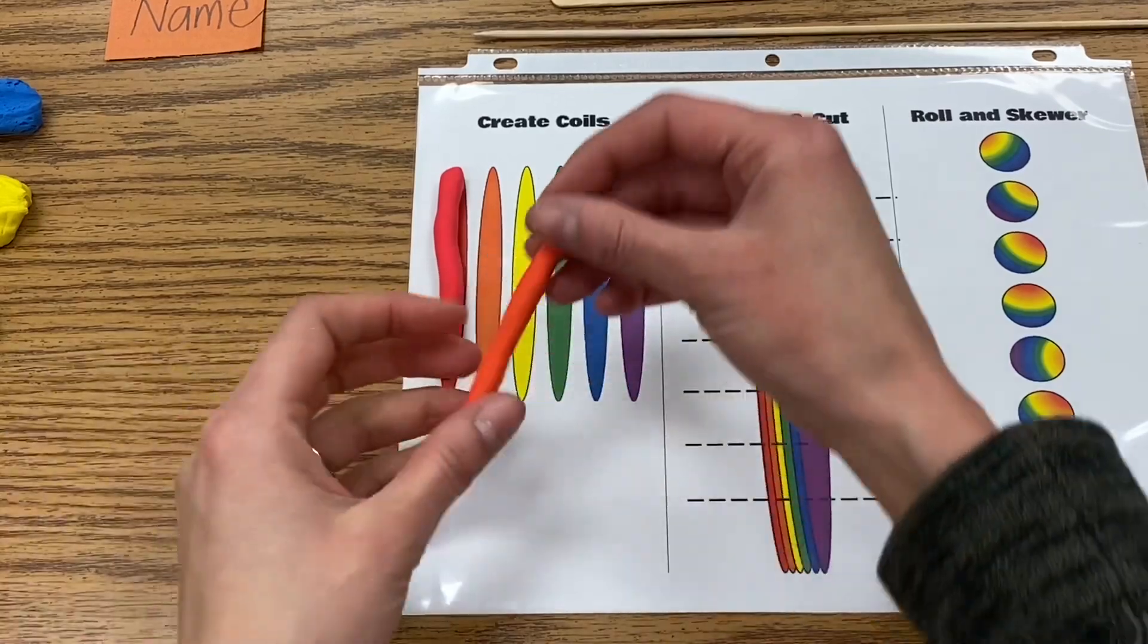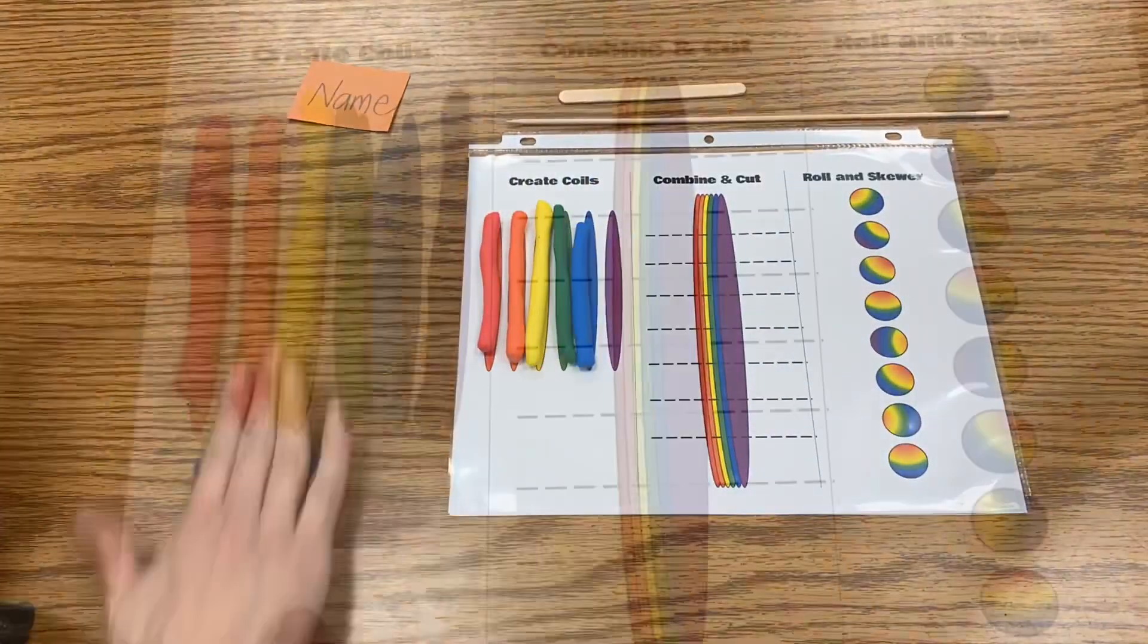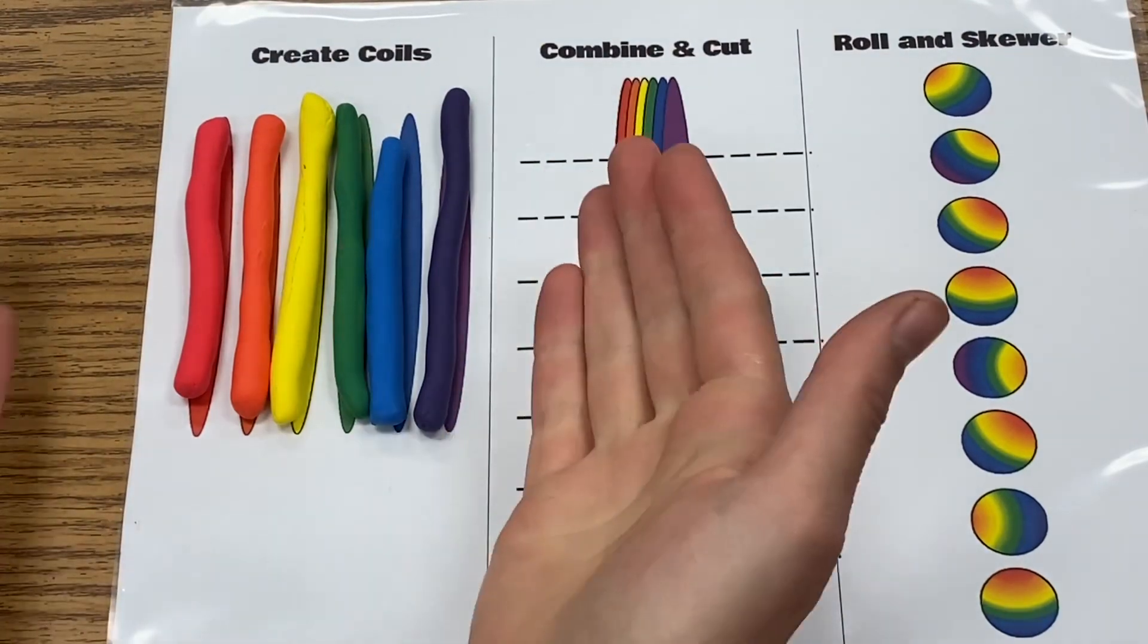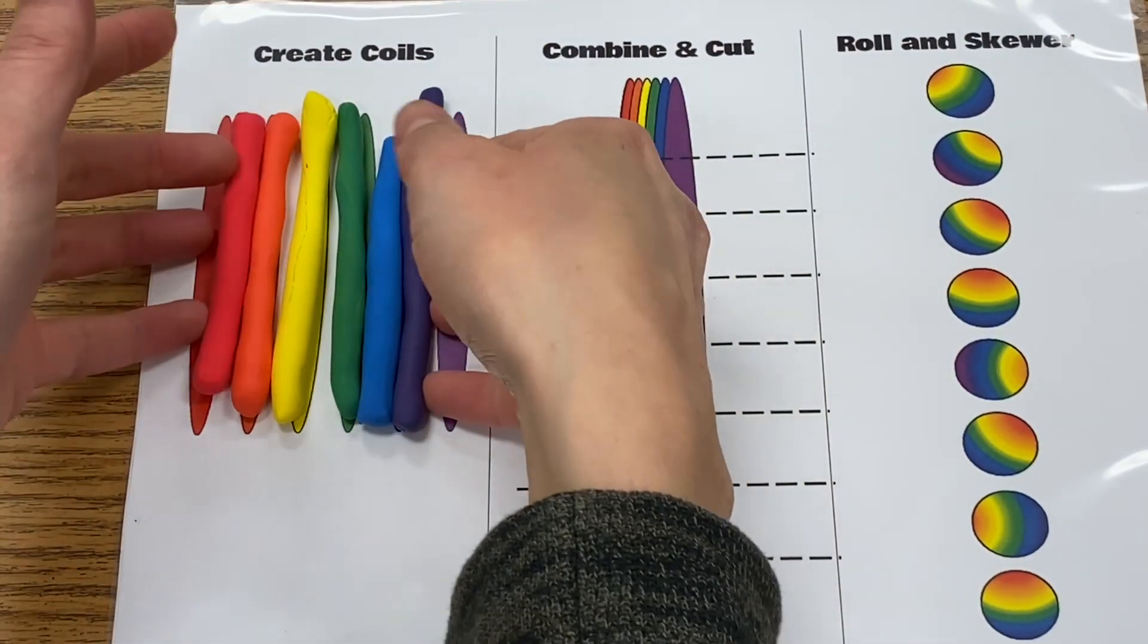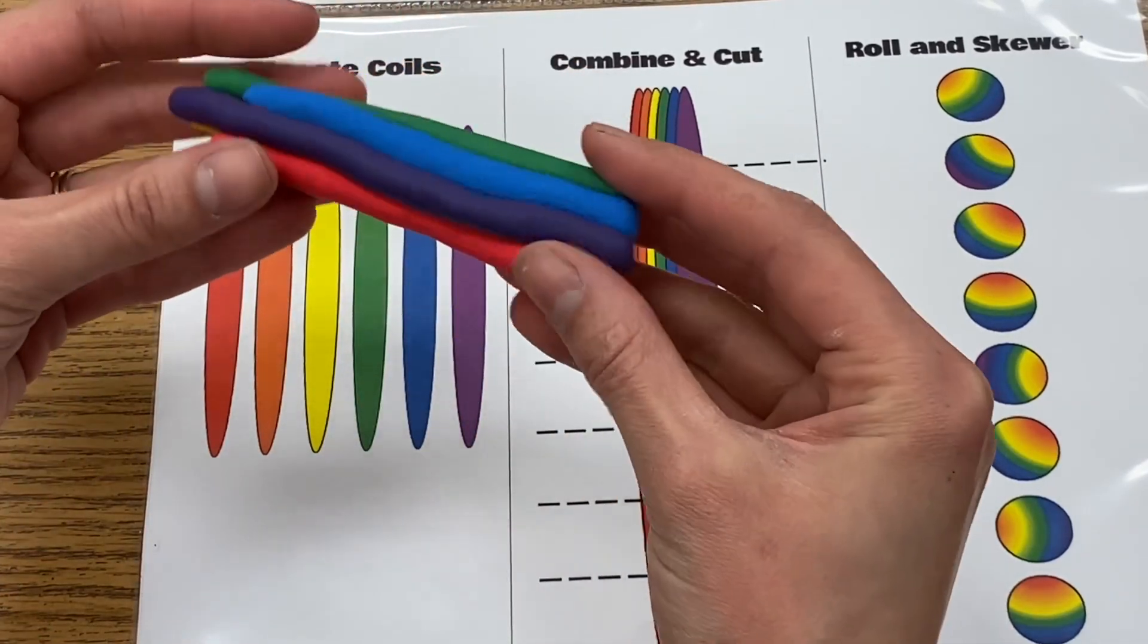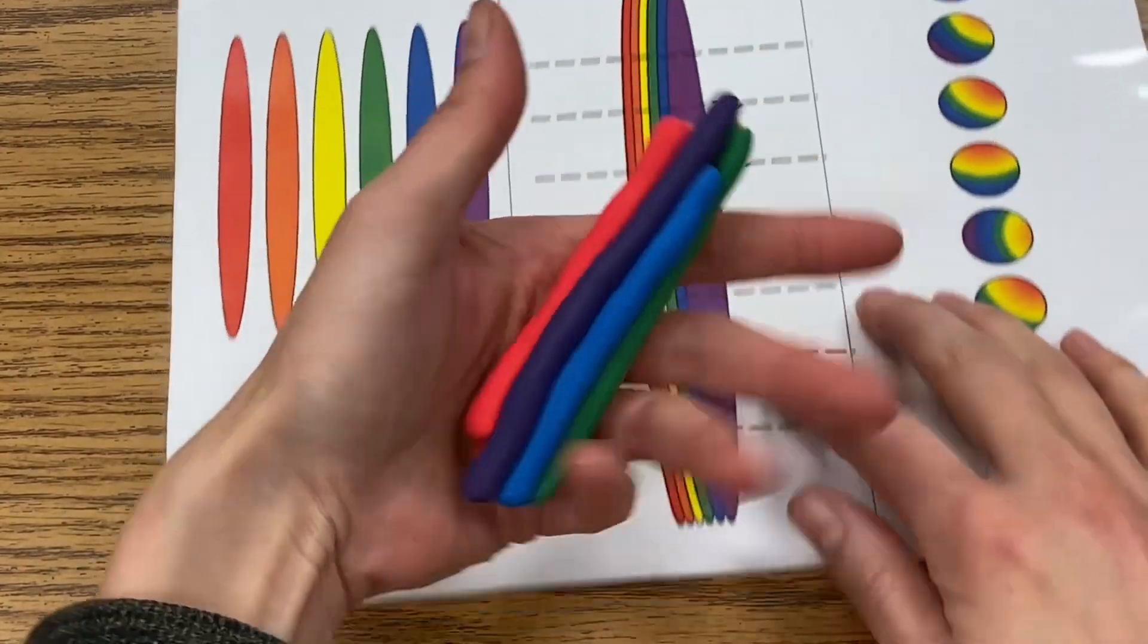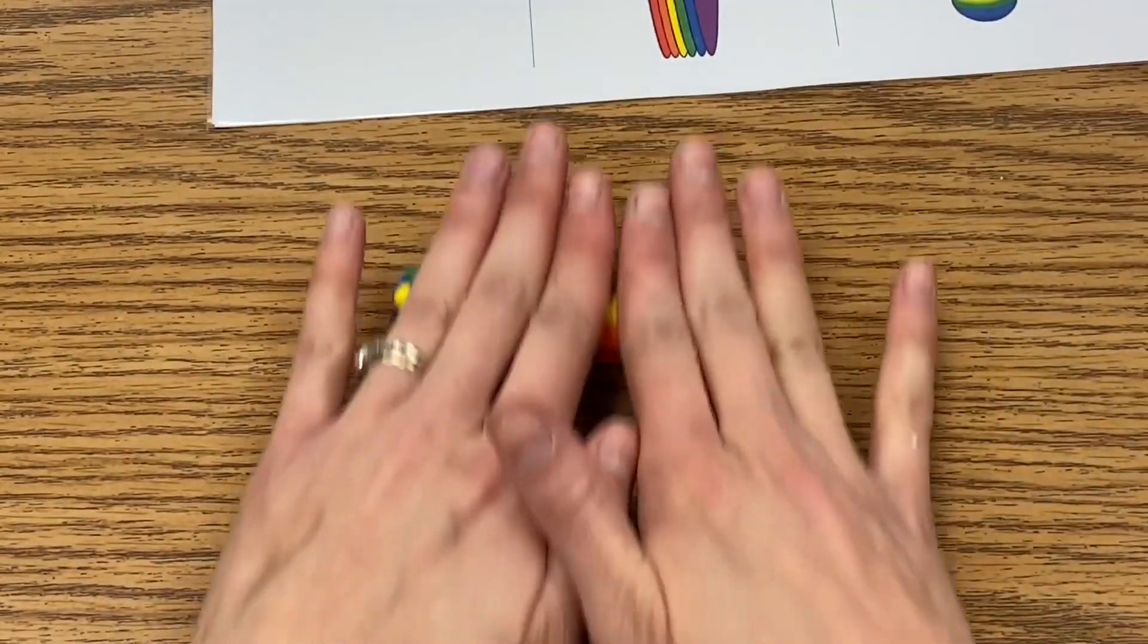So I'm going to roll all of my model magic pieces into small coils and set them on my mat. Now we're going to take all the little coils you made, and if yours got stuck together a little bit it's okay because we're going to roll them all up so they're all one piece.